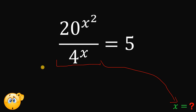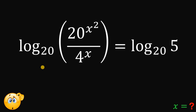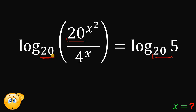So how do we solve this kind of problem? The first thing we need to do is take the logarithm to the base 20 on both sides. You might ask why base 20 instead of base 10. The purpose is because we have 20 here, and we know that 20 is just 5 times 4.